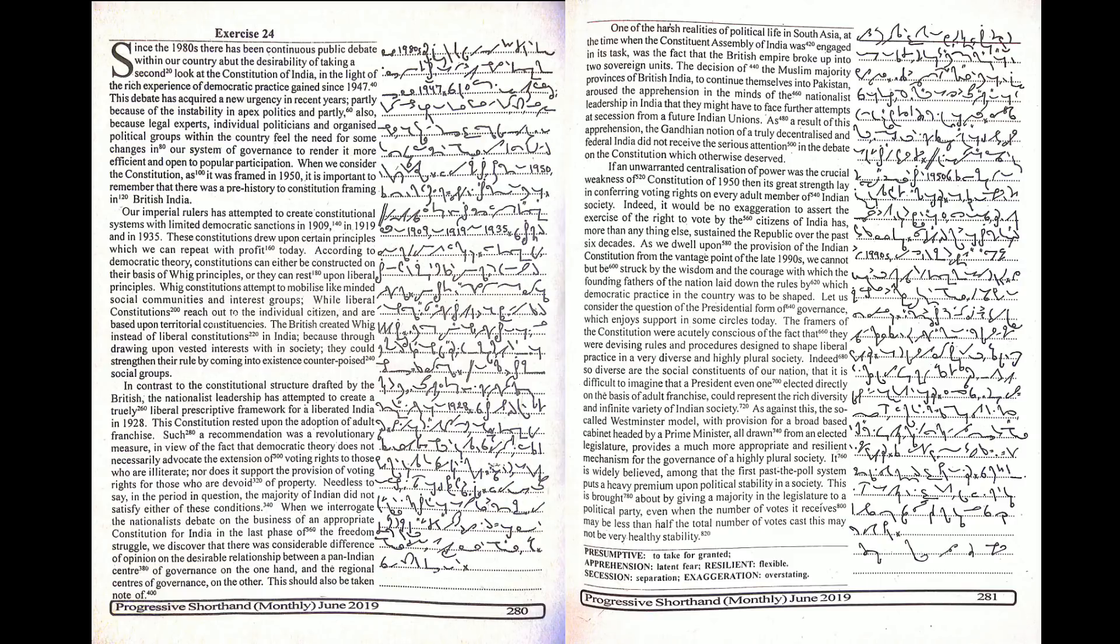When we interrogate the nationalists' debates on the business of an appropriate constitution for India in the last phase of the freedom struggle, we discover that there was considerable difference of opinion on the desirable relationship between a pan-Indian centre of governance on the one hand and the regional centres of governance on the other.